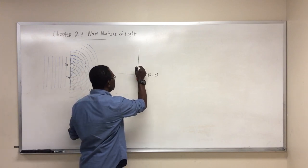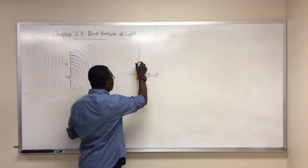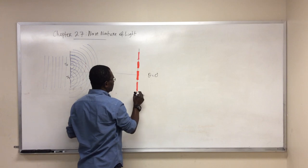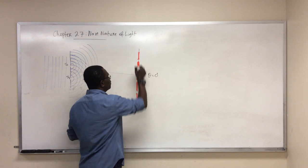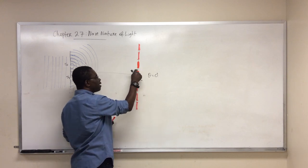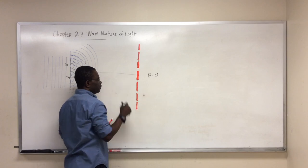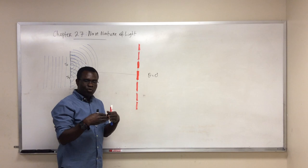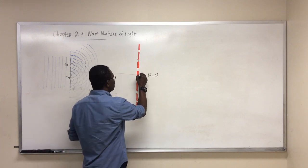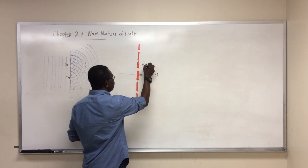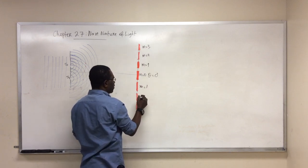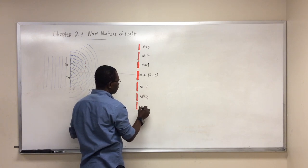Adjacent to the central maximum will be the first order fringe, then the second order fringe, the third order, the fourth, and so on. In between these bright fringes are dark fringes where the two waves destructively interfere and cancel each other out. The central maximum is the 0th order, or n equals 0. The first is n equals 1, the second n equals 2, and similarly on the other side because the pattern is symmetric.